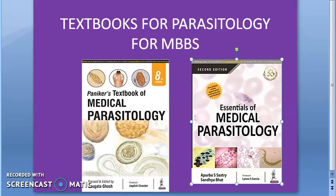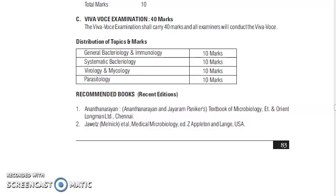The PDFs are available online. Read them, compare them, decide what you want, look at Amazon reviews, and buy whatever you want. If you are doing combined study, it might help if you buy the same book as your friends.